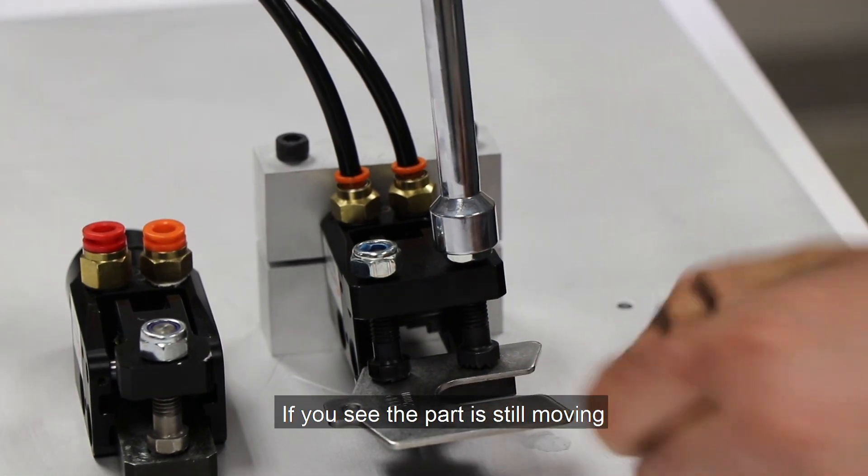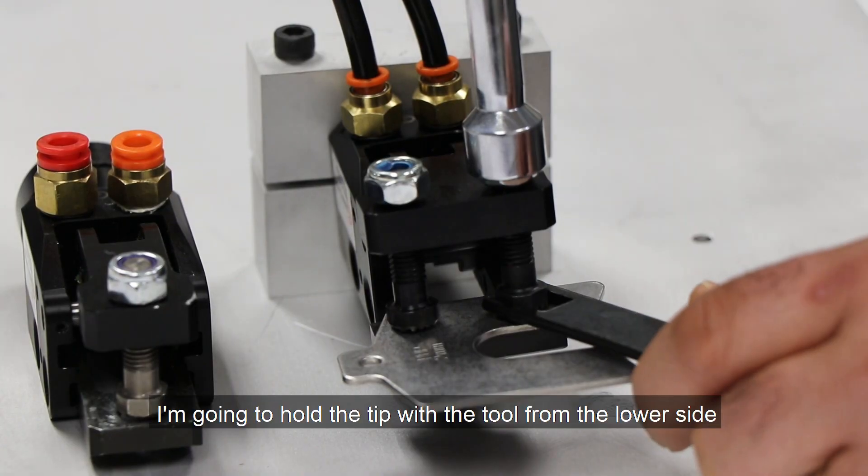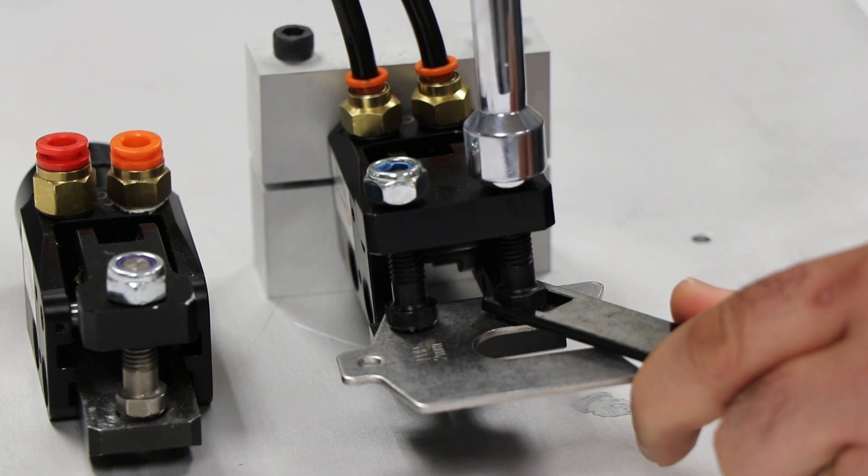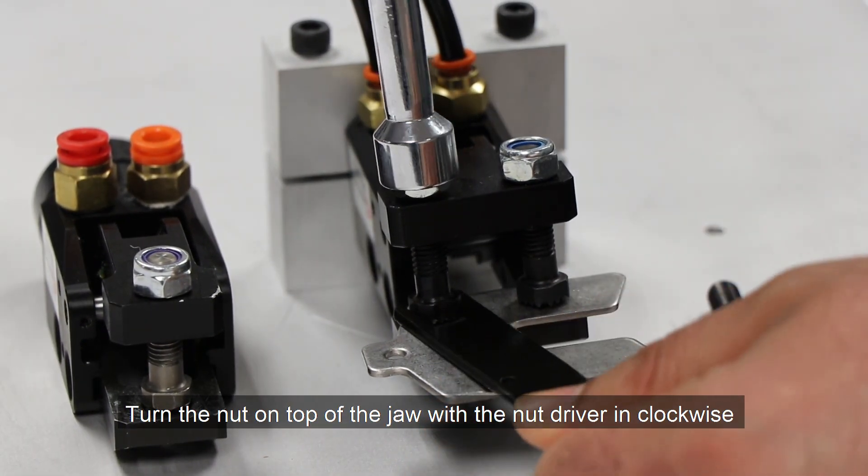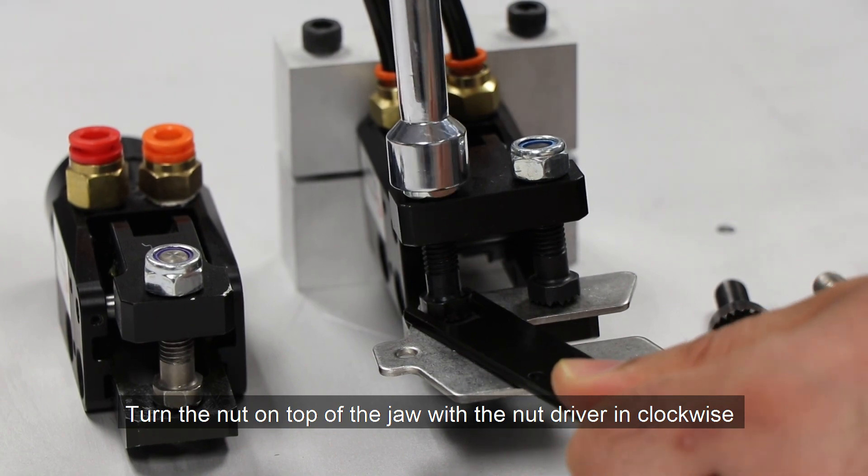If you see the part is still moving, I'm going to hold the tip with the tool from the lower side. While holding the tip with the tool from the lower end, turn the nut on top of the jaw with the nut driver in a clockwise direction.